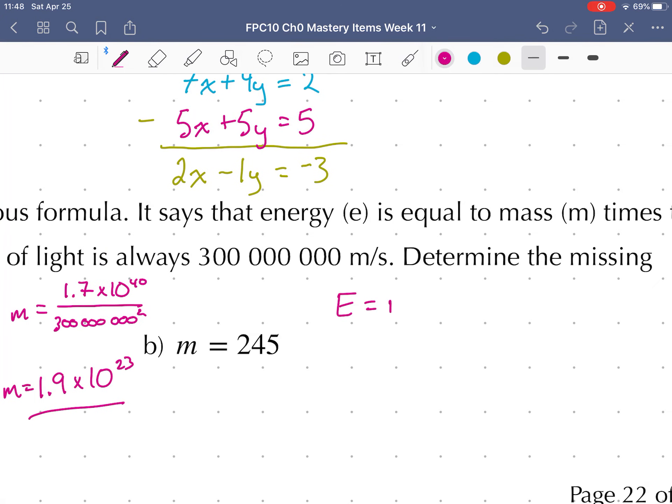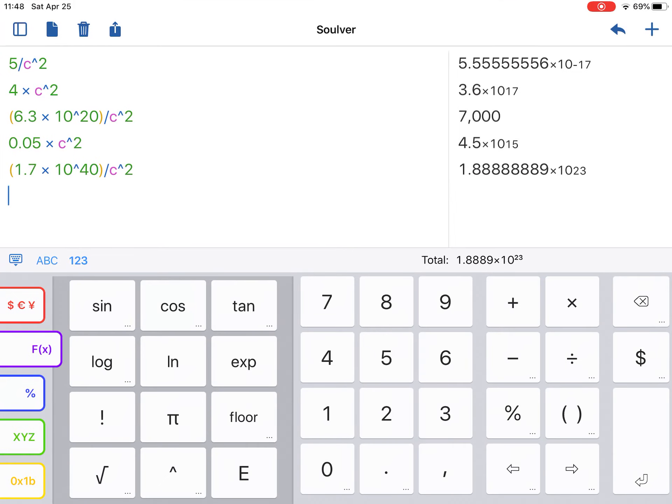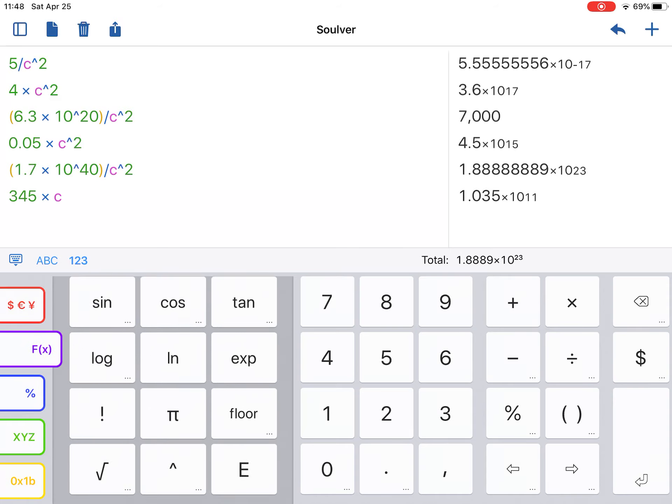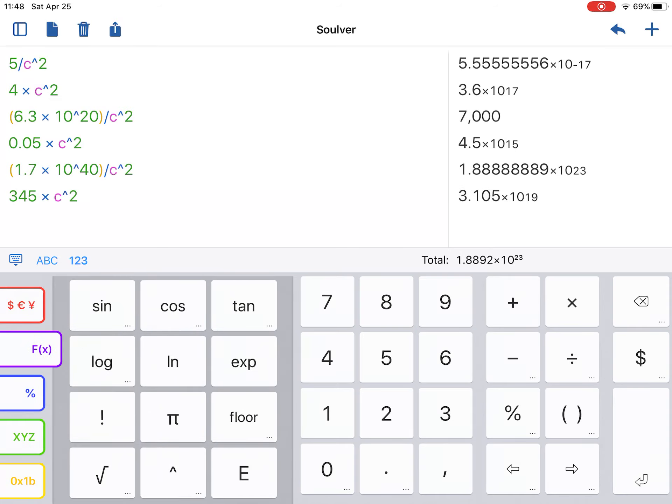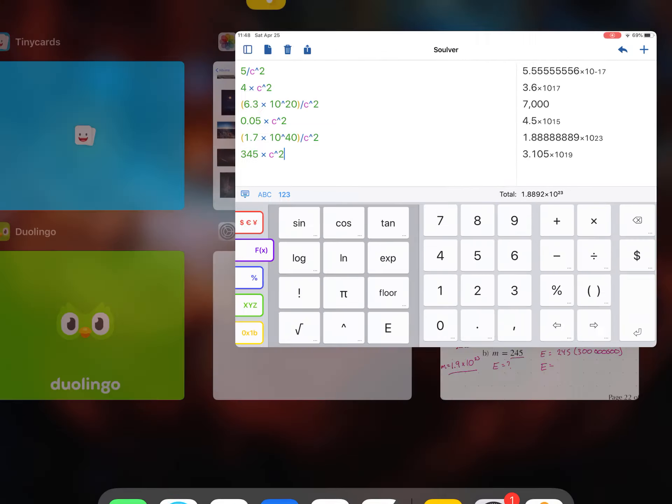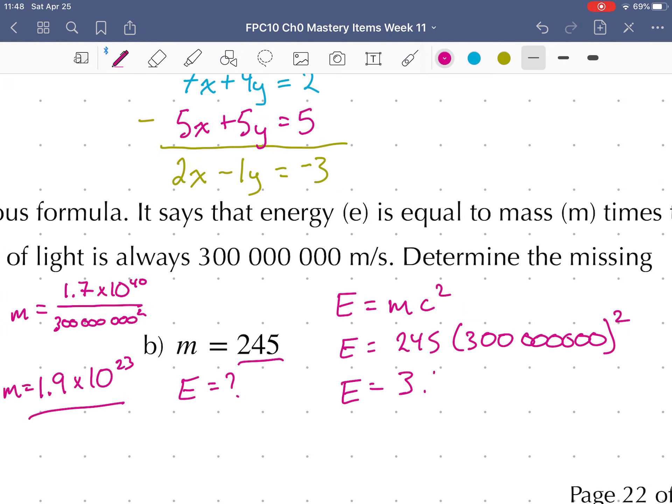Last one. Energy equals mass times the speed of light squared. This time we know the mass and we're calculating the energy. So we don't need to rearrange this formula at all. Energy equals 245 times 300 million squared. So we go back here, 345 times my speed of light. And I square that speed of light, and I get 3.105 times 10 to the power of 19. So 3.1 times 10 to the power of 19.